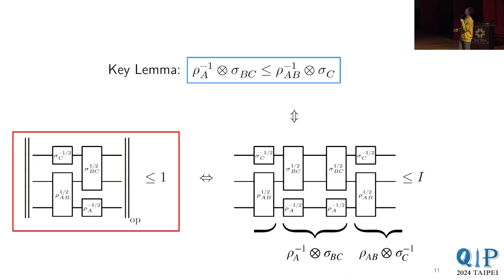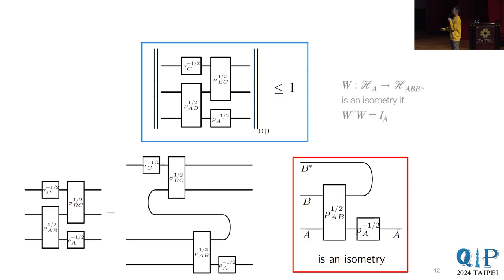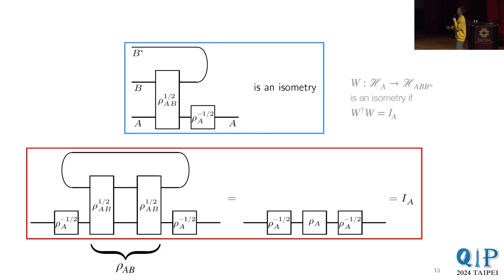So now we'll want to show this operator norm is less than one. And so to show that, we'll do this funny circuit move. So what we do is we take this middle wire, and then we go around. So now we have these two blocks. And if we can show that each of these block is an isometry, then because isometry has operator norm one, so when you multiply the two, it has operator norm less than equal to one, which is what we want. So all we need to show is to show this isometry.